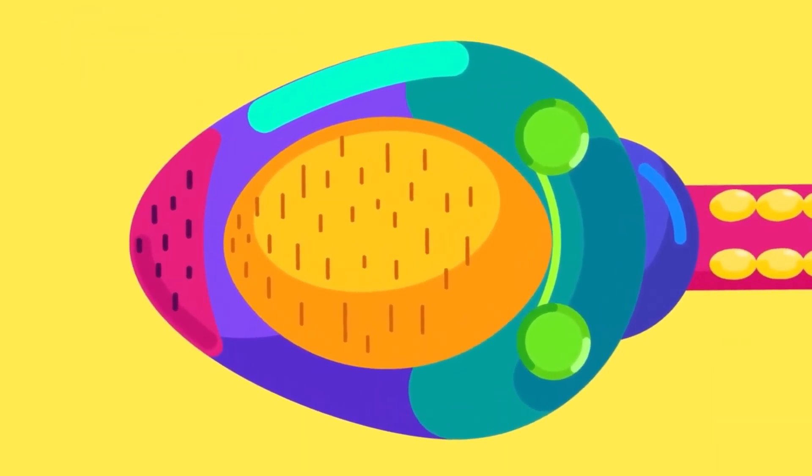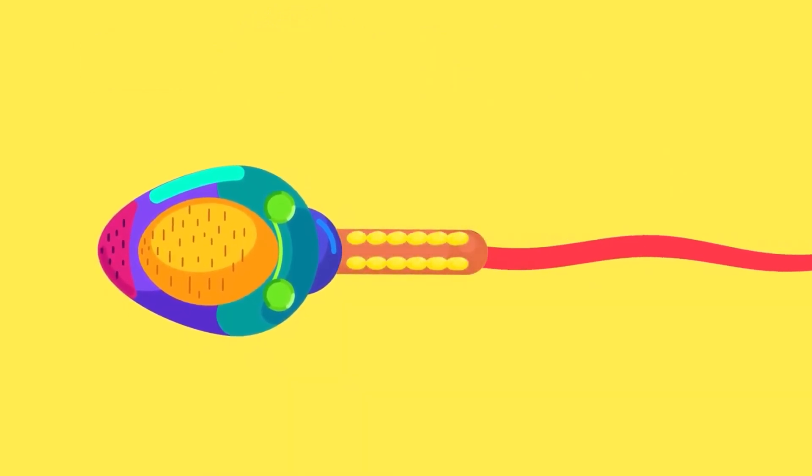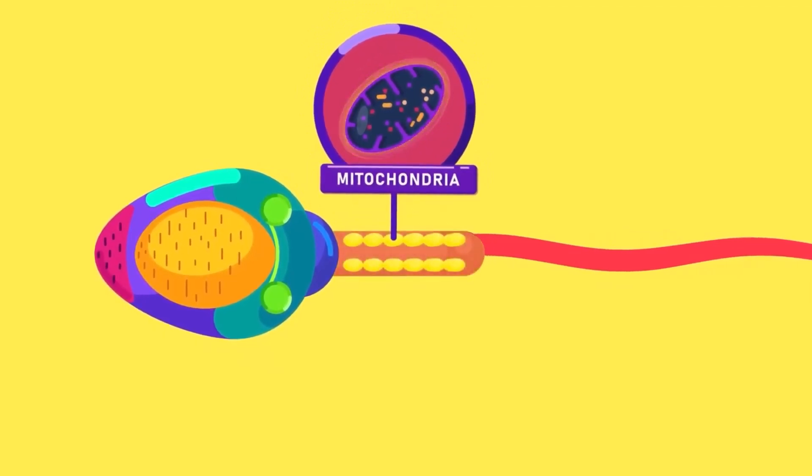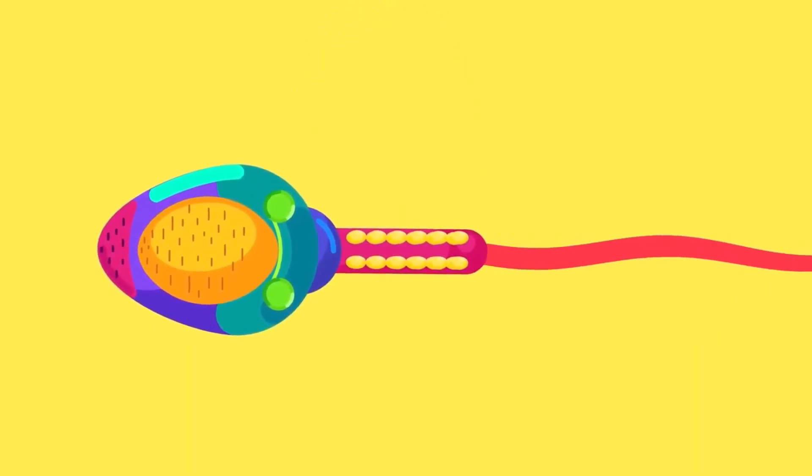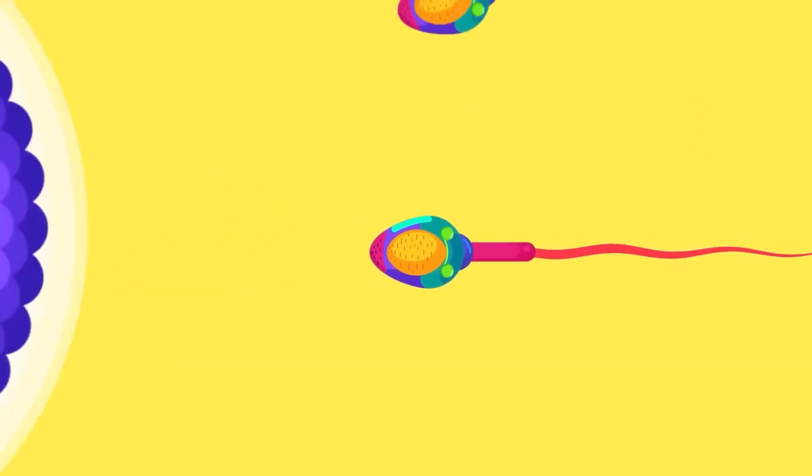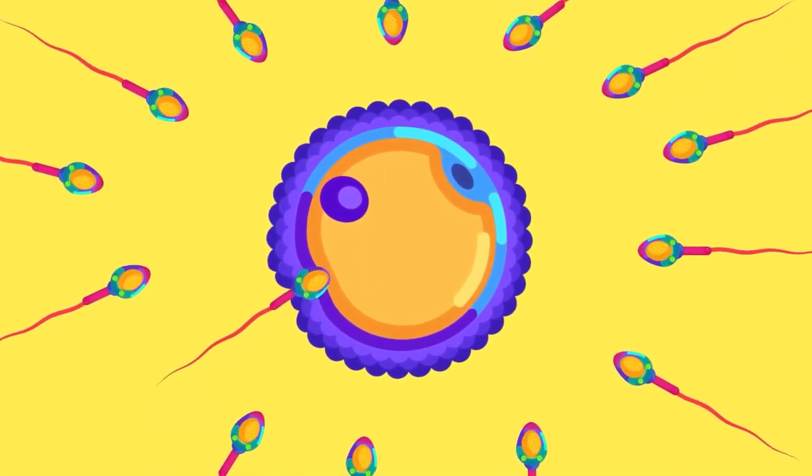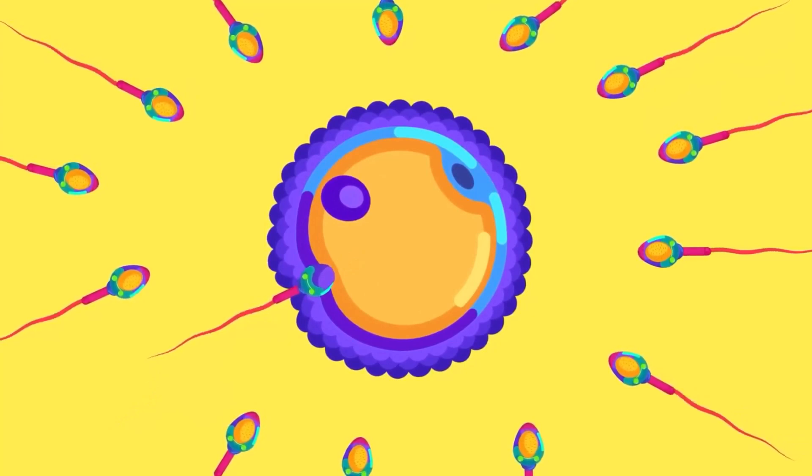The acrosome is a sac containing enzymes. The human sperm also includes a middle piece containing mitochondria to provide energy for the activity of the sperm and, of course, a tail or flagellum to enable the sperm to swim towards the egg. The enzymes can break down part of the egg membranes to let the sperm penetrate during fertilization.